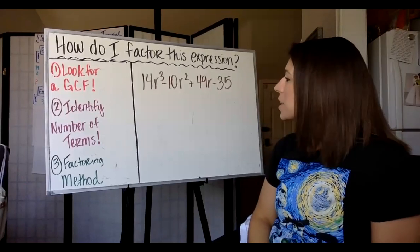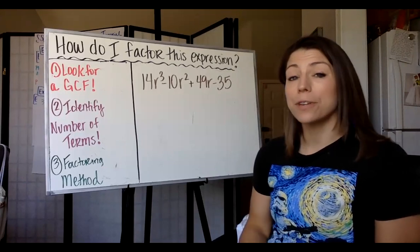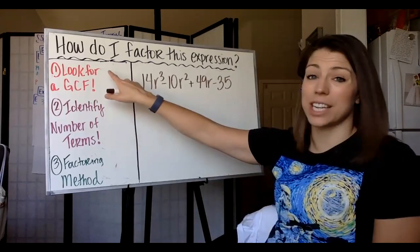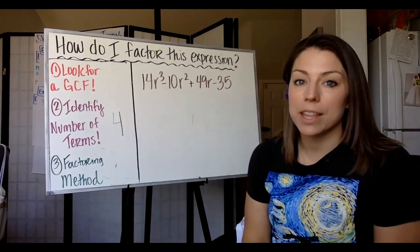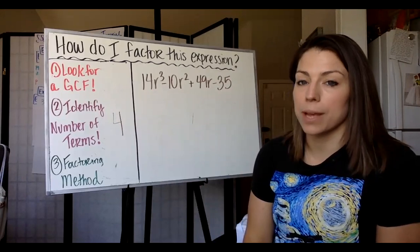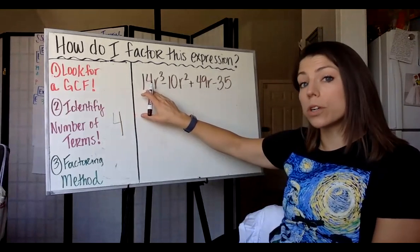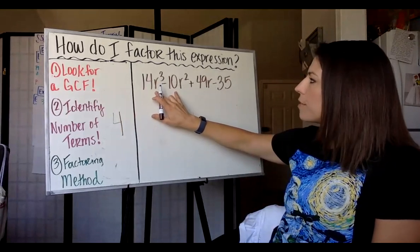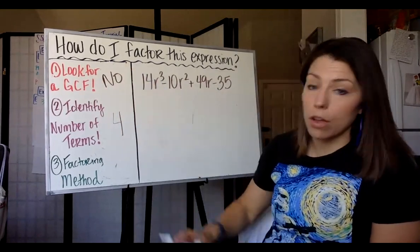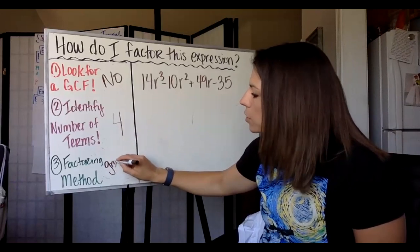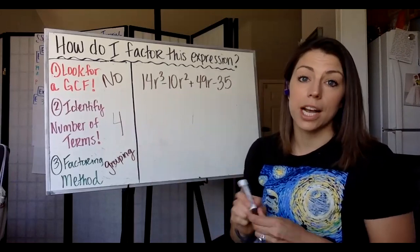Example three: 14R cubed minus 10R squared plus 49R minus 35. This is a four-term polynomial, which means the only method we can use here is factor by grouping. Let's check for a GCF — there is no common factor among all four terms, but there is a common factor among the first two and the second two. We will use factor by grouping because that's the only method when your expression has four terms.